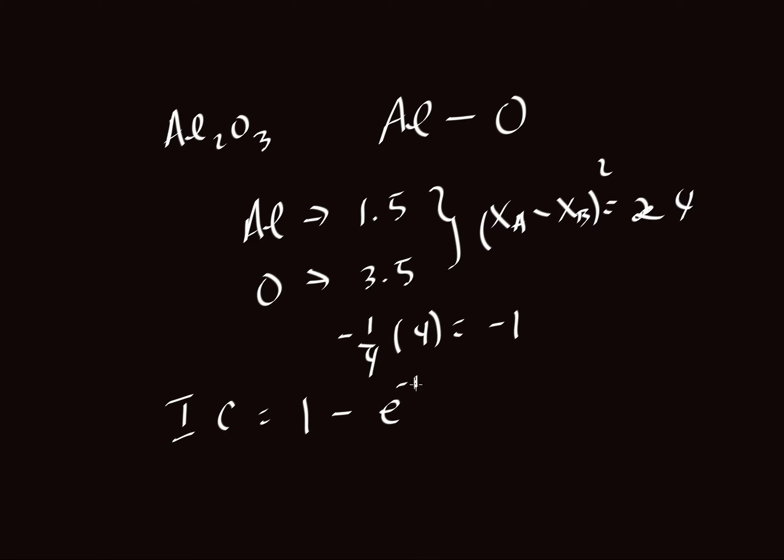And so going back to our earlier equation where ionic character is equal to 1 minus e to whatever the exponent is. In this case that exponent is minus 1.